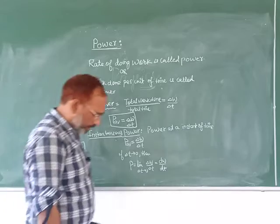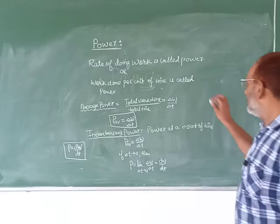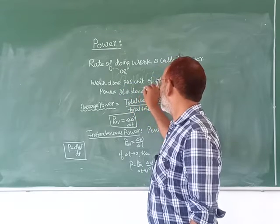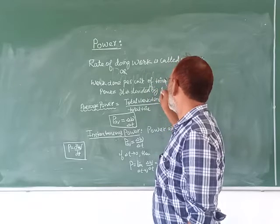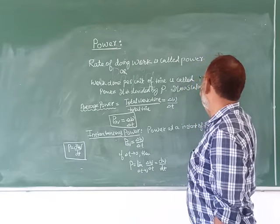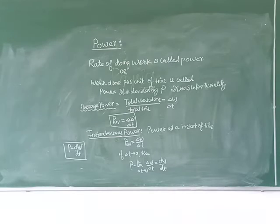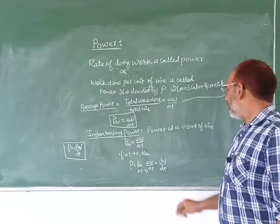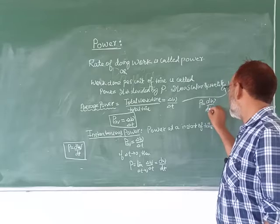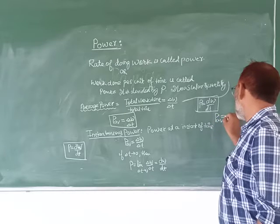Power means the rate of doing work. It is denoted by P. It is a scalar quantity. Average power is equal to delta W by delta T, and instantaneous power is denoted by dW by dt.